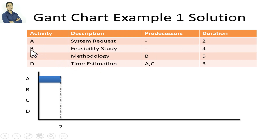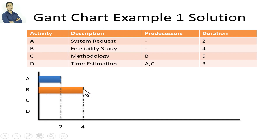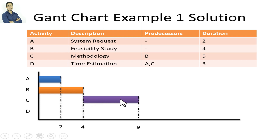Activity B also has no predecessors, so it begins from the Y axis as well. I draw its rectangle and write its duration. Then I move to activity C, which depends on activity B, so activity C begins right after activity B ends. I draw the rectangle for C, which has a duration of 5.